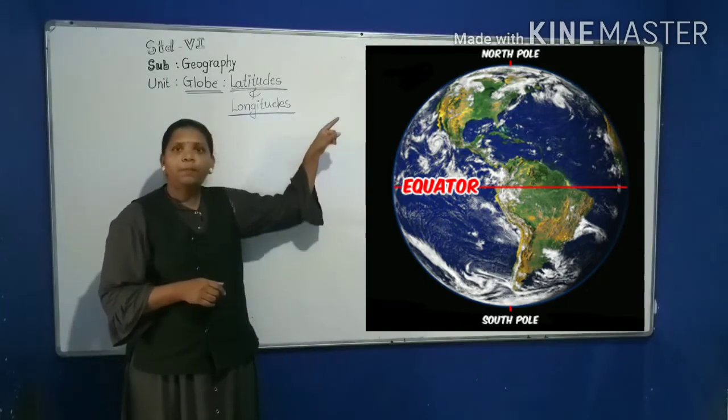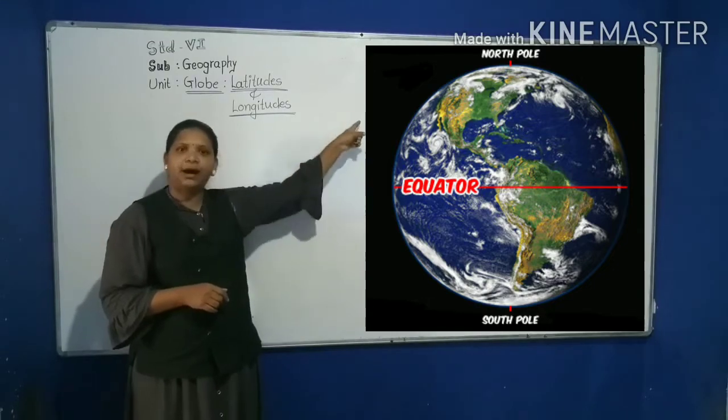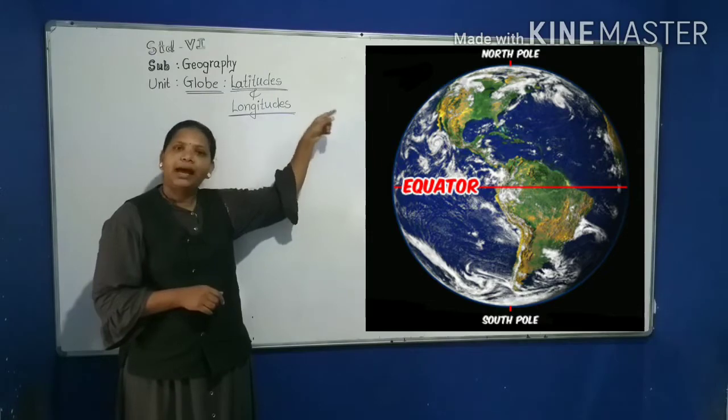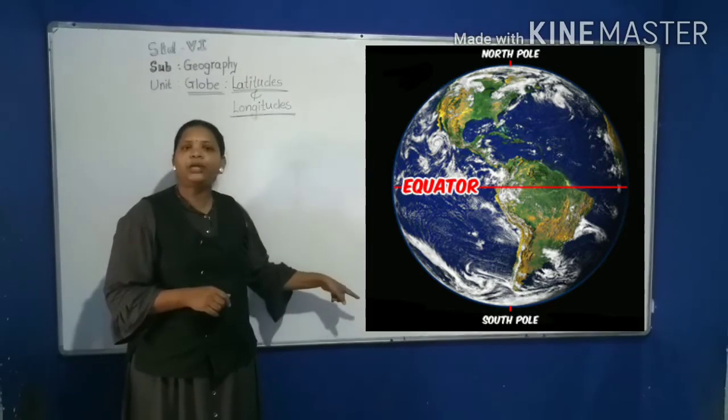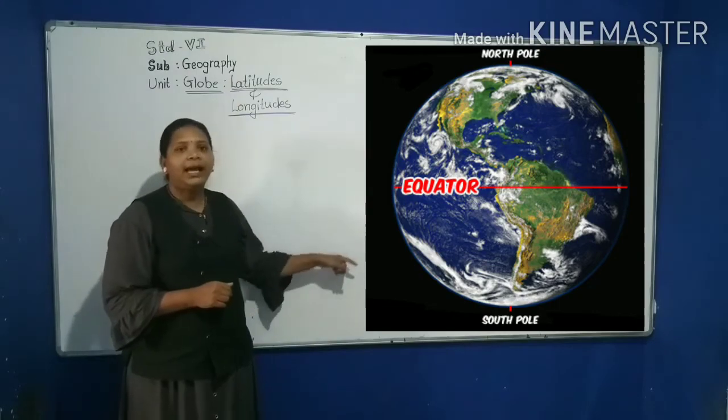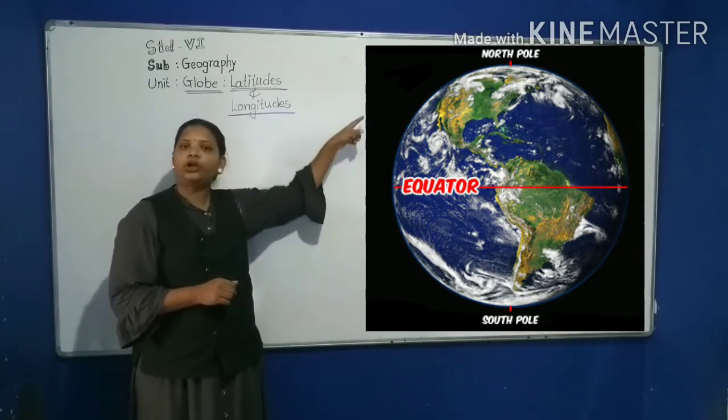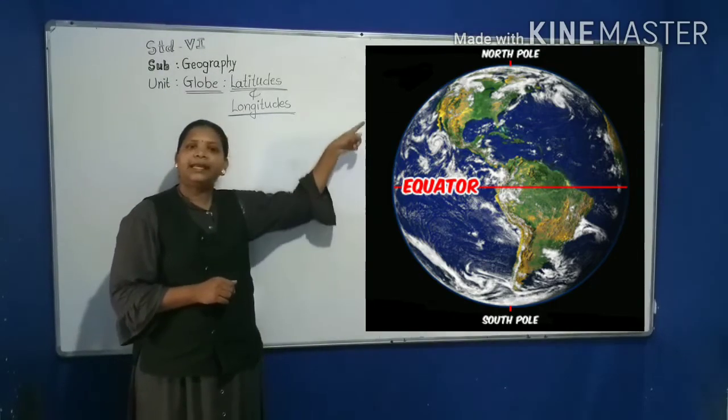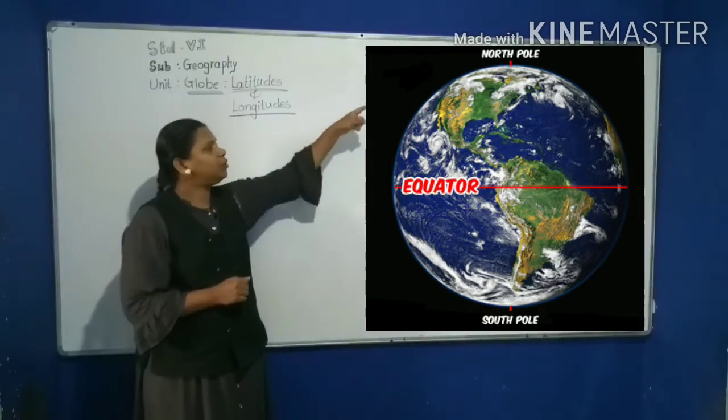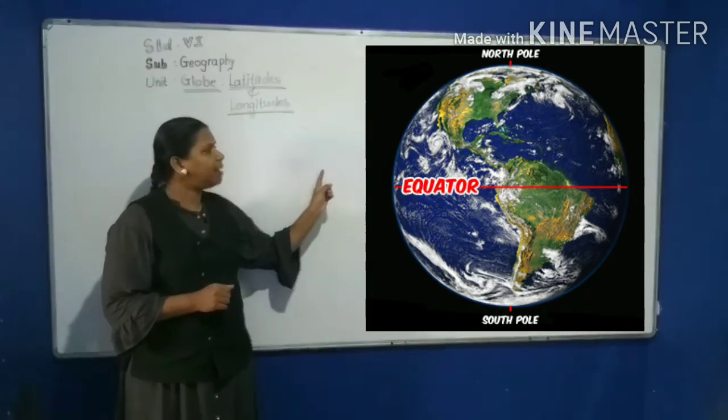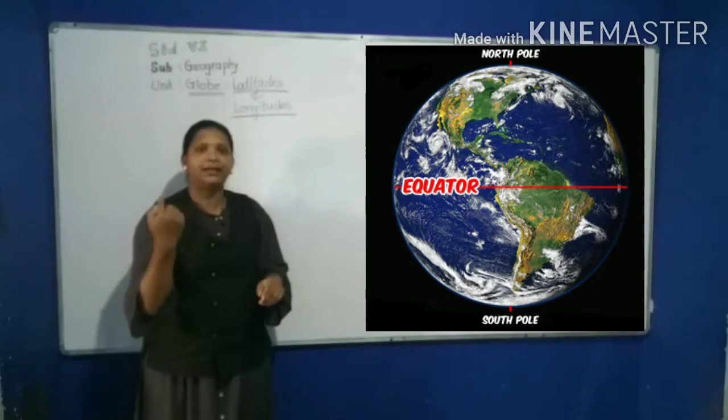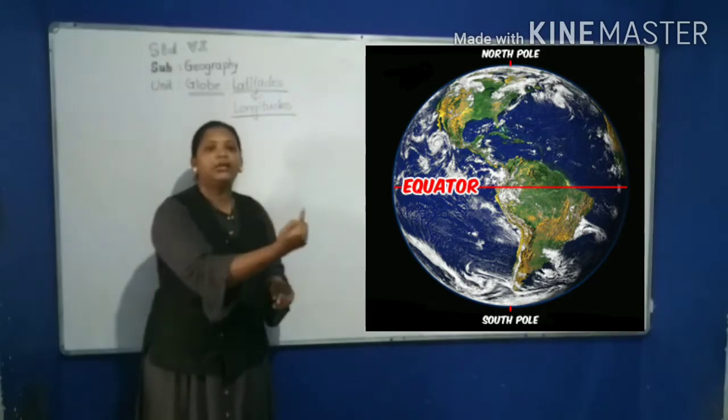The pole pointing towards the pole star, the north, is called North Pole and the pole opposite to it is called South Pole. Between the North Pole and South Pole, there is an imaginary line called the equator.